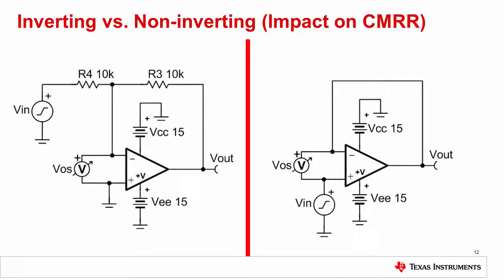An easy way to avoid common mode voltage errors is to use the inverting op-amp topology instead of the non-inverting topology. In the non-inverting configuration, the op-amp common mode voltage varies with the input voltage, introducing common mode errors.